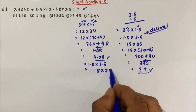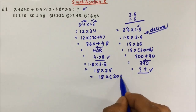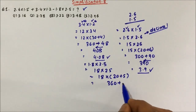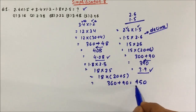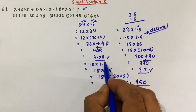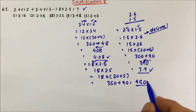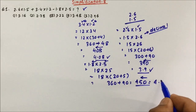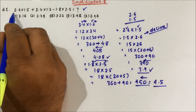Now for 1.8 × 2.5: remove the decimals and compute 18 × 25. That's 18 × 20 + 18 × 5 = 360 + 90 = 450. There are two decimals — one before the 5 and one before the 8 — so from the right side, place the decimal after two digits. This gives 4.5. So 1.8 × 2.5 = 4.5.